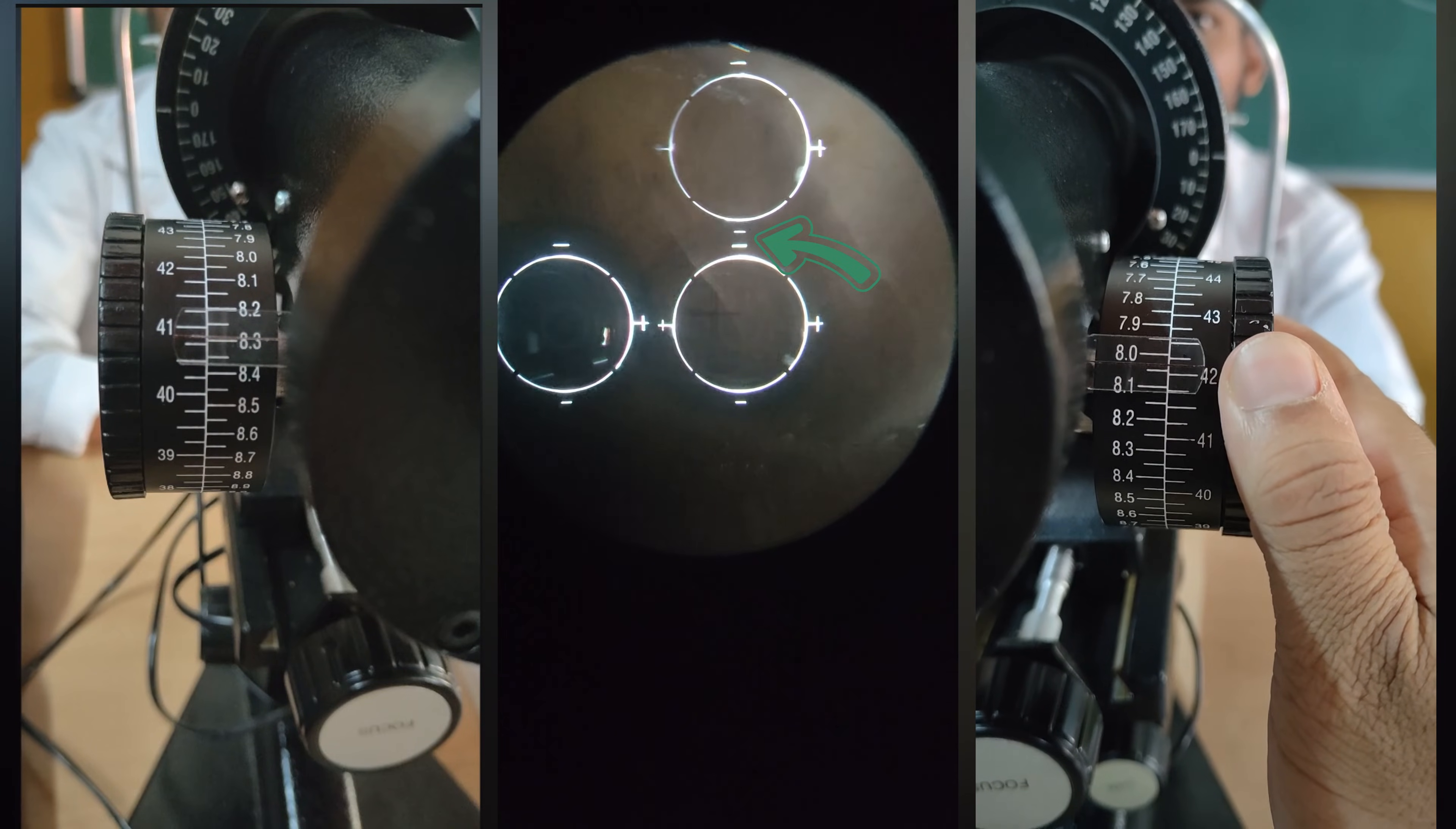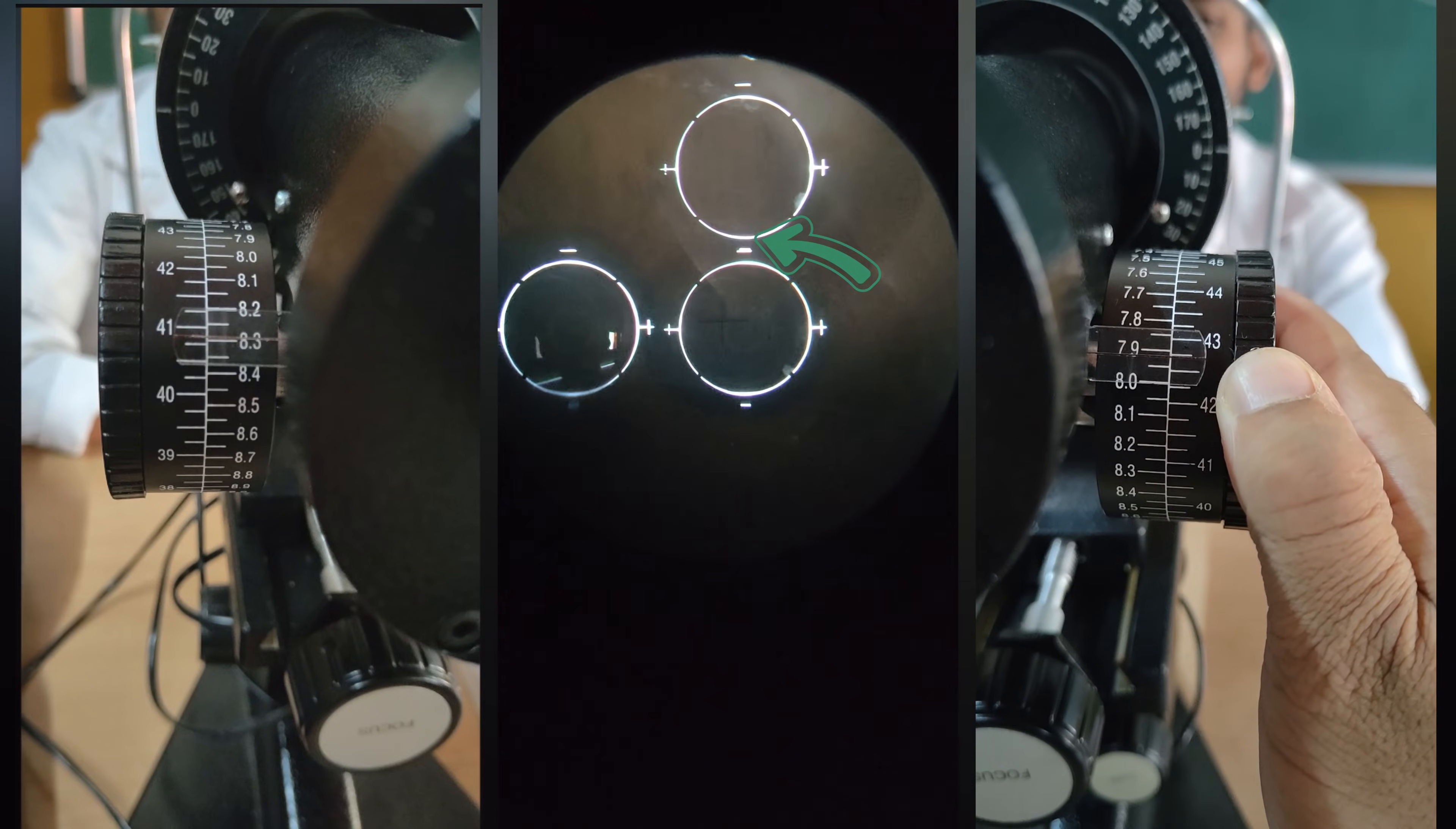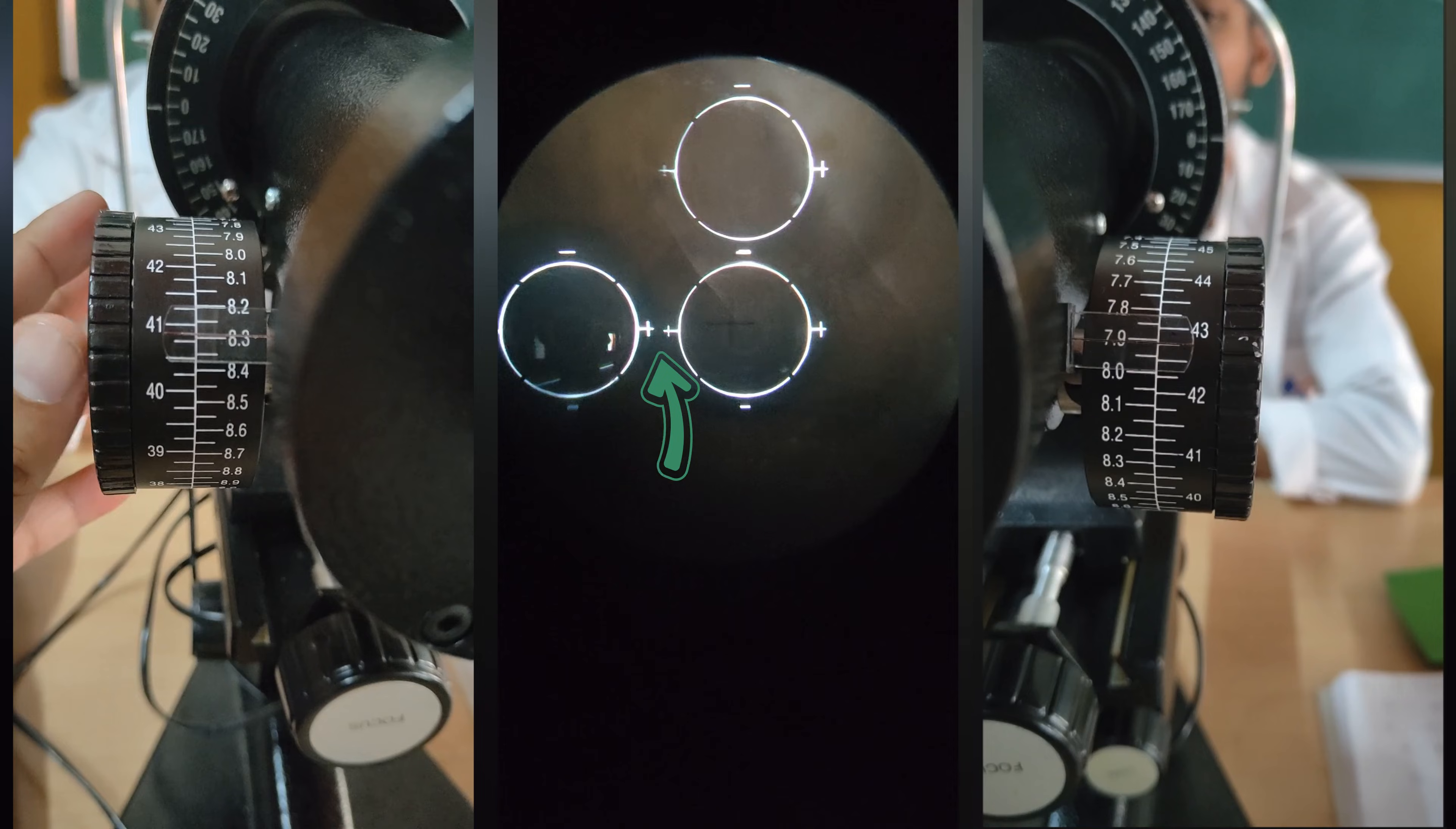Adjust the vertical wheel until minus signs are overlapping. Adjust the horizontal wheel until the plus signs are overlapping.